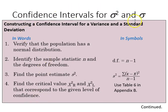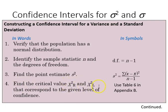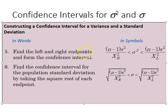The steps for building a confidence interval for variance or standard deviation are: one, verify the population has a normal distribution; two, identify the sample statistic n and degrees of freedom, which is n minus 1; three, find the point estimate — the sample variance or standard deviation — calculated as the sum of squared deviations over n minus 1; four, find the critical values chi-square R and chi-square L corresponding to the level of confidence using the degrees of freedom; and five, find the left and right endpoints to form the confidence interval for variance, then take the square root for standard deviation.